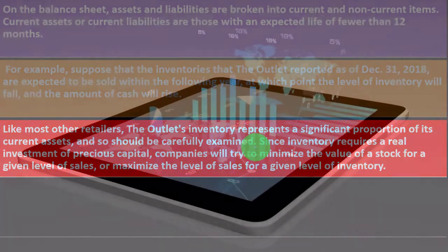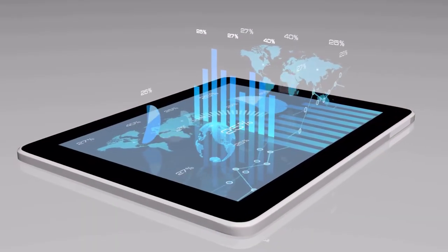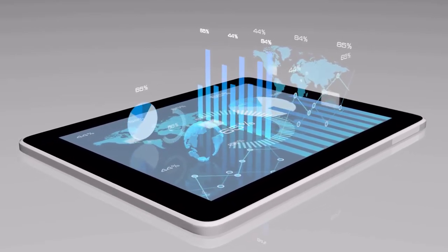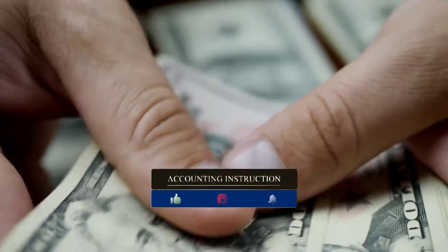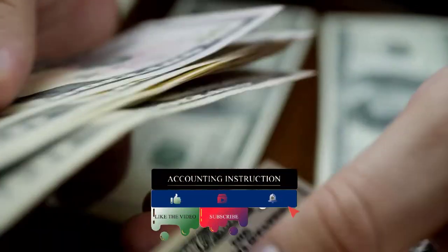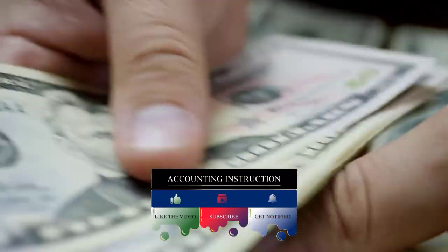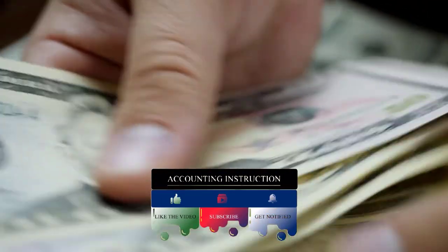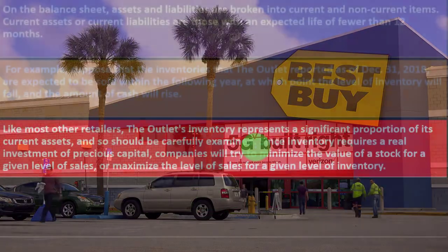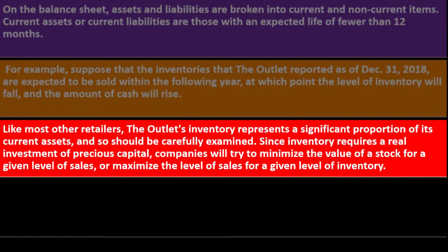Inventory is included in current assets because we expect it to be sold within a year and converted to cash, which can then pay off current liabilities coming due in the short term. For a retail store, inventory is a huge factor. Since inventory requires a real investment of precious capital, companies try to minimize inventory value for a given level of sales and maximize sales for a given level of inventory.